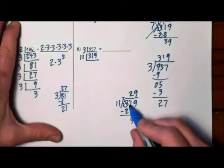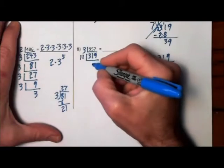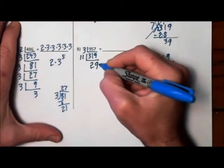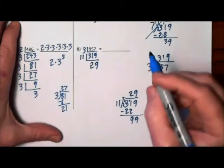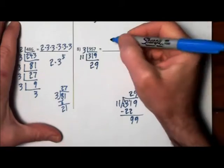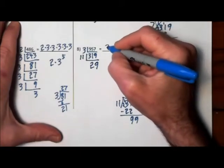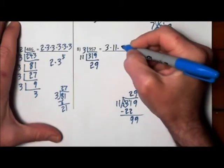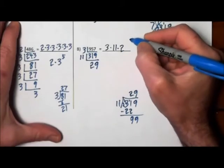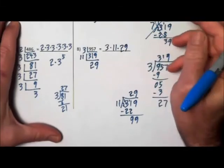11 goes into 319, 29 times. And you remember from our list 29 is a prime. So the prime factorization of 957 is 3 times 11 times 29.